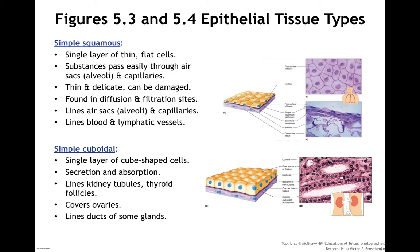Simple squamous is a thin layer of flattened cells. Substances are able to pass easily through them, making them important for places where we want to exchange material. For instance, in the lungs, gas exchange occurs through simple squamous epithelium. Capillaries would also be lined this way. They're thin and delicate, making them prone to damage. They're found in places where we're doing diffusion and filtration — great examples are the linings of the alveoli within the lungs and the capillaries within blood vessels.